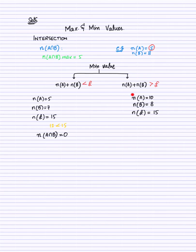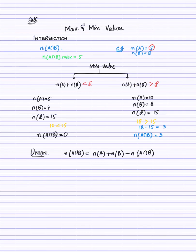In Case 2, N(A)+N(B) = 18, which is greater than the universal set of 50 — wait, 10+8=18 which is less than 50. But when the sum is greater than the universal set, the minimum value of A∩B equals N(A)+N(B) minus N(Universal). For example, 18−15=3, so the minimum of A∩B is 3.